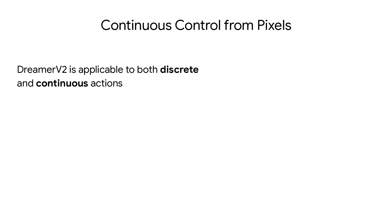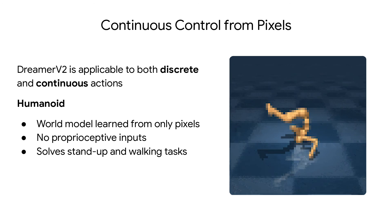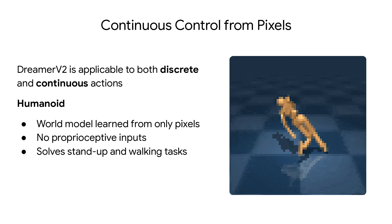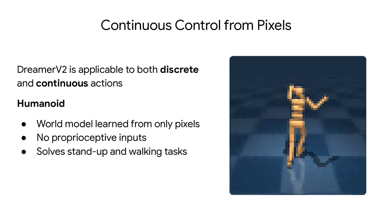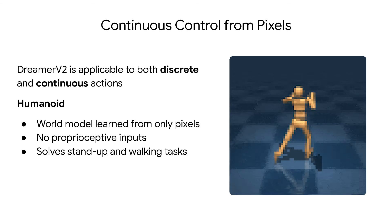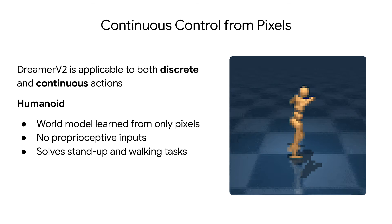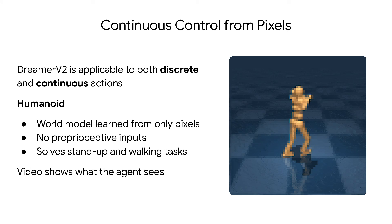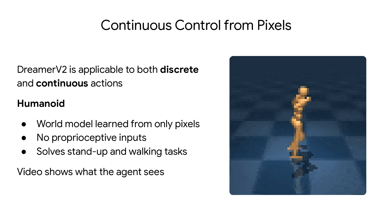DreamerV2 is also applicable to continuous control tasks. The agent is able to learn an accurate world model of the complex humanoid environment only from pixel inputs, without proprioceptive information, that is accurate enough to solve the stand-up and walking tasks. The video here shows exactly what the agent sees.